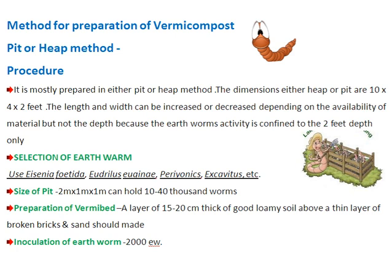There are different methods for preparation of vermicompost, but the pit or heap method is the quickest and easiest. It is mostly prepared in either pit or heap method. The dimensions are 10 by 4 by 2 feet. The length and width can be increased or decreased depending on availability of material, but not the depth, because earthworm activity is confined to 2 feet depth only.